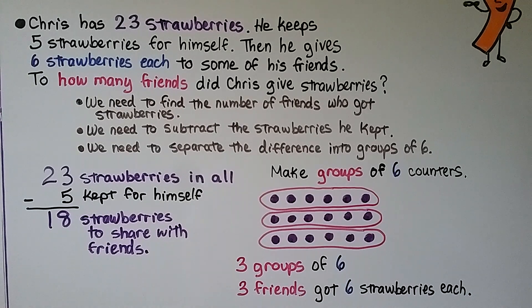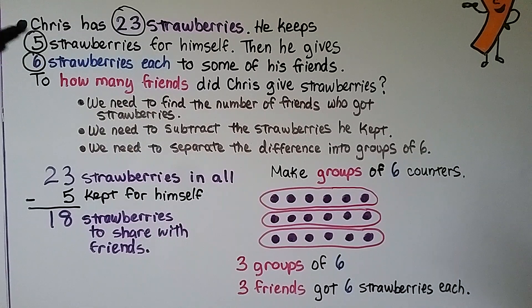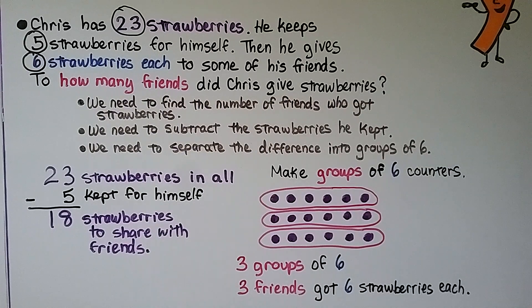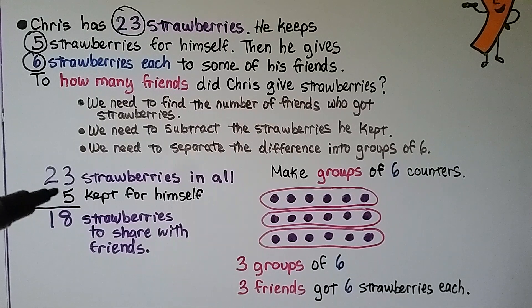Here we have a word problem. Chris has 23 strawberries. He keeps 5 strawberries for himself, then gives 6 strawberries each to some of his friends. How many friends did Chris give strawberries to? The important numbers are 23, 5, and 6. We need to subtract the strawberries he kept for himself: 23 minus 5 is equal to 18 strawberries to share with his friends.